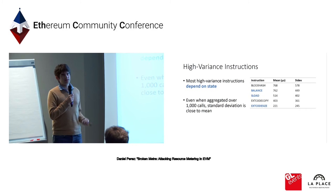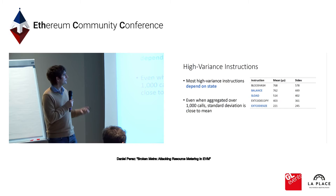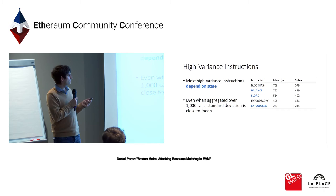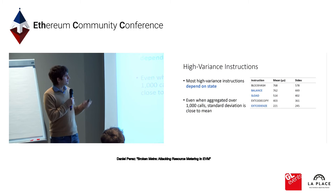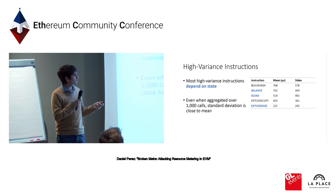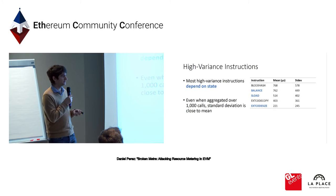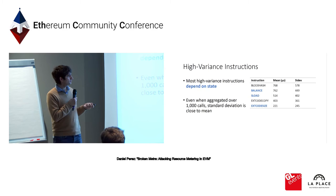We then looked more into why this was happening, examining which instructions had the highest variance in execution time. Most of these were state-dependent instructions — looking at the table, BALANCE, SLOAD, and EXTCODESIZE all require reading from state. The variance for these is very high and is not reflected in the gas cost, which means they could be usable to generate slow programs.